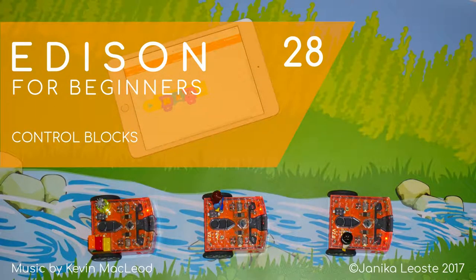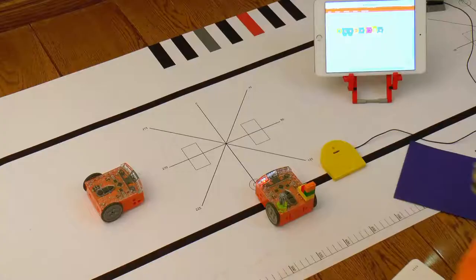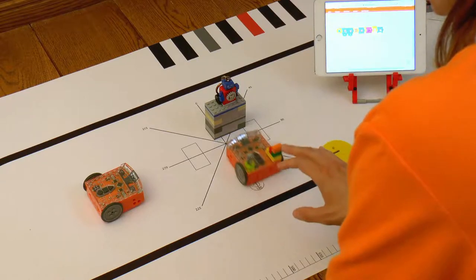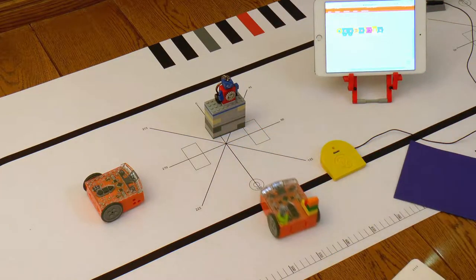Control Blocks. In the last video, we reminded ourselves what blocks make Edison wait for a certain event to happen or a certain amount of time to pass.